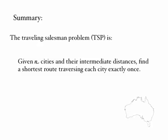So in summary then, the traveling salesman problem is given N cities, some number, and the distances between them, find the shortest route traversing each city exactly once. Thanks for watching.